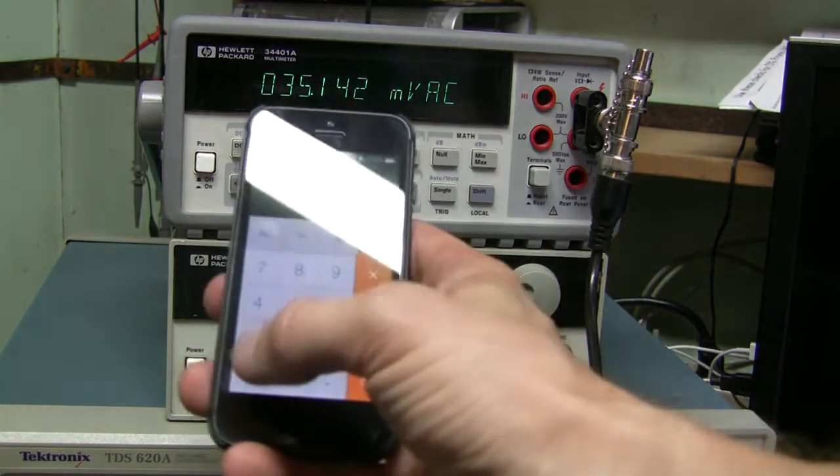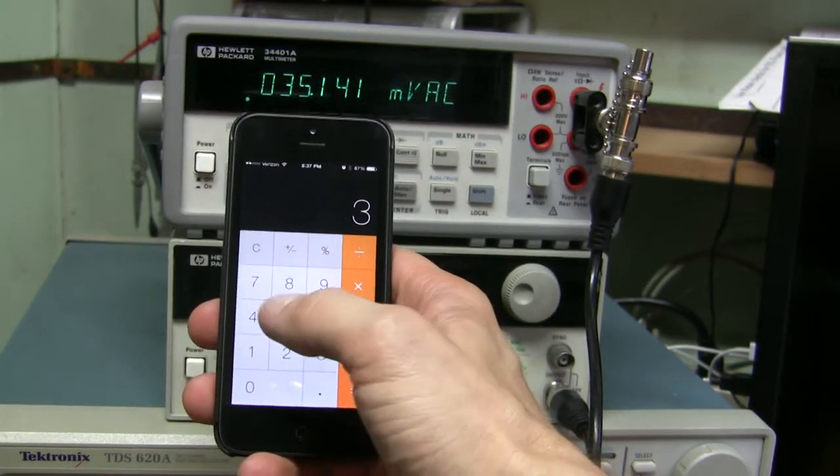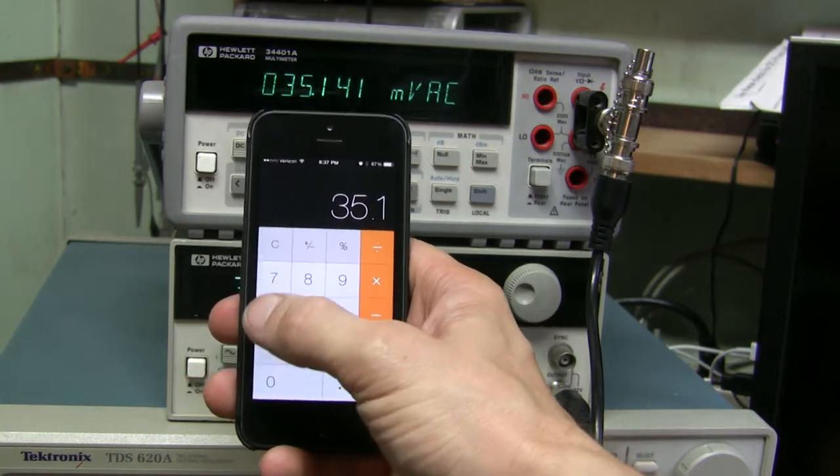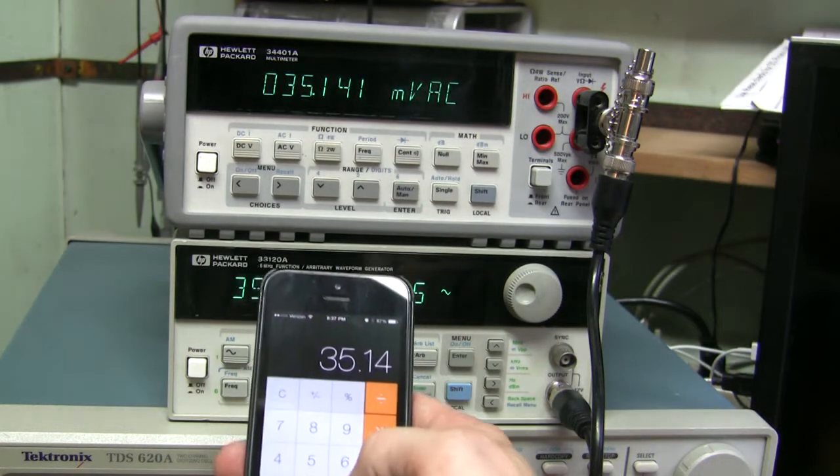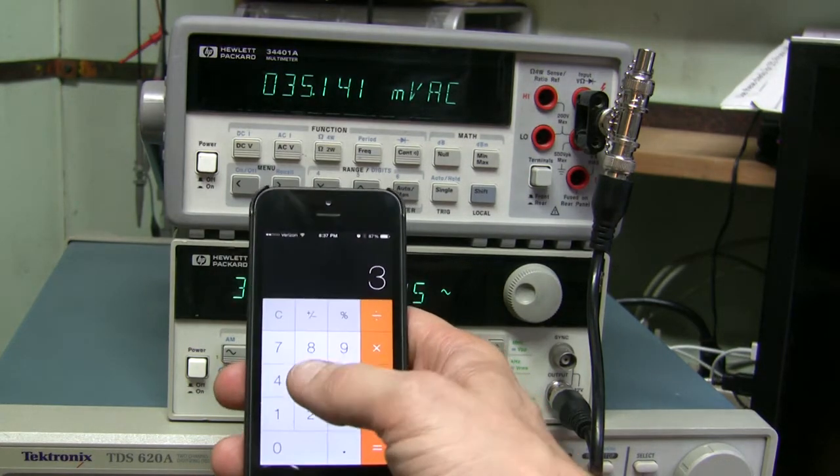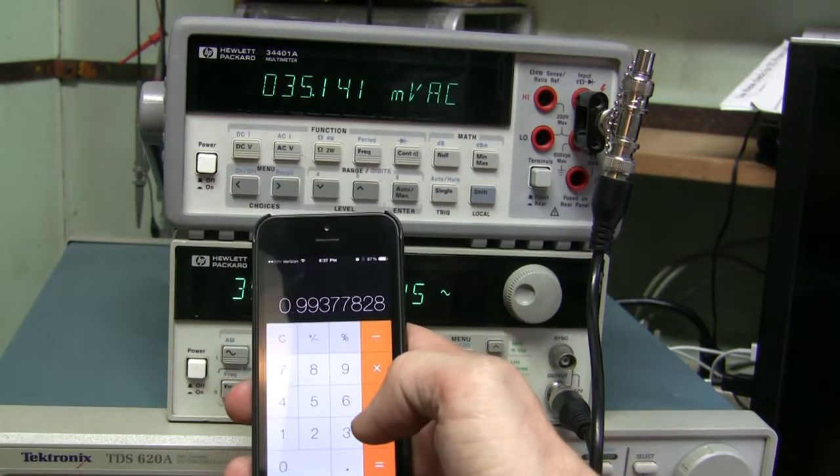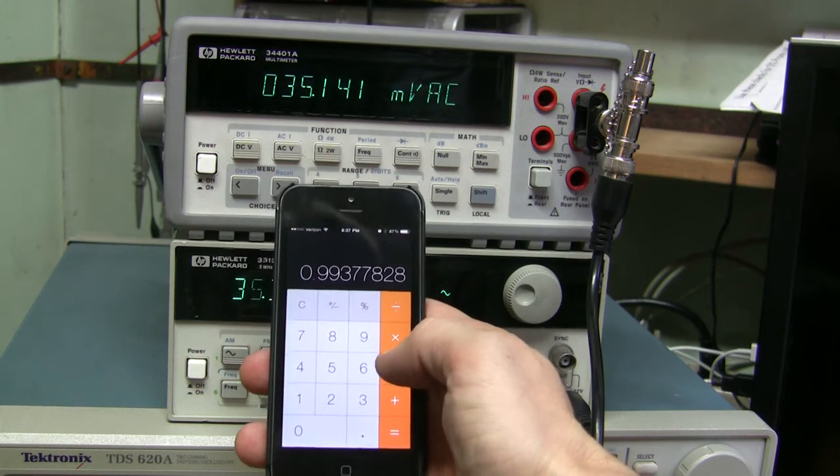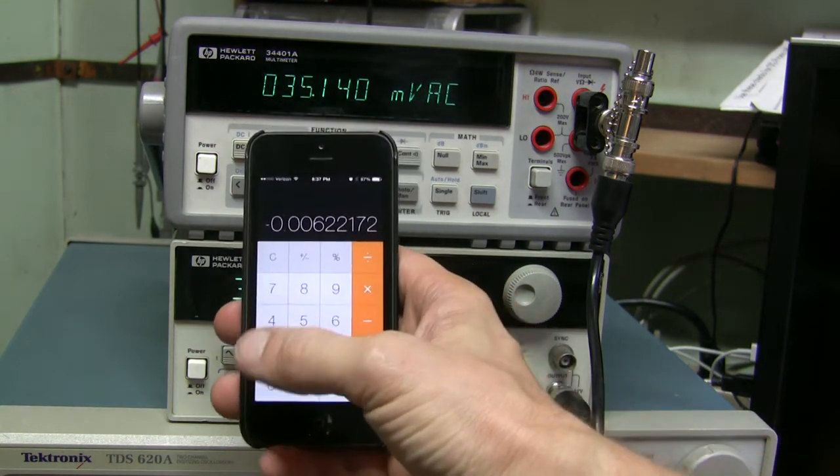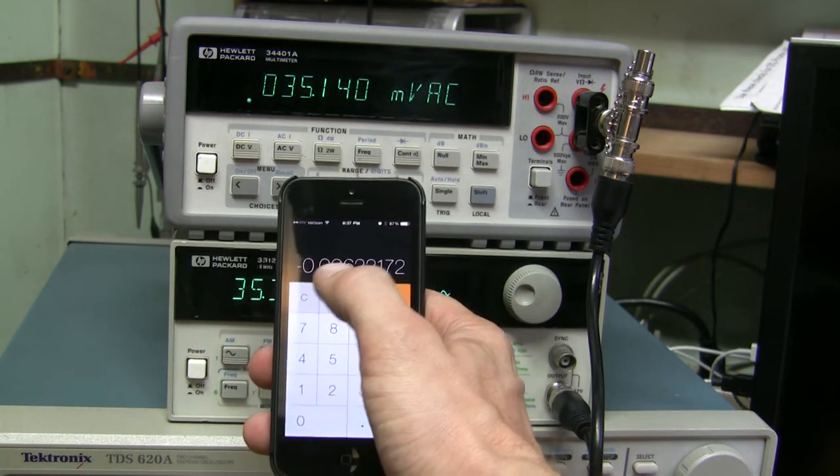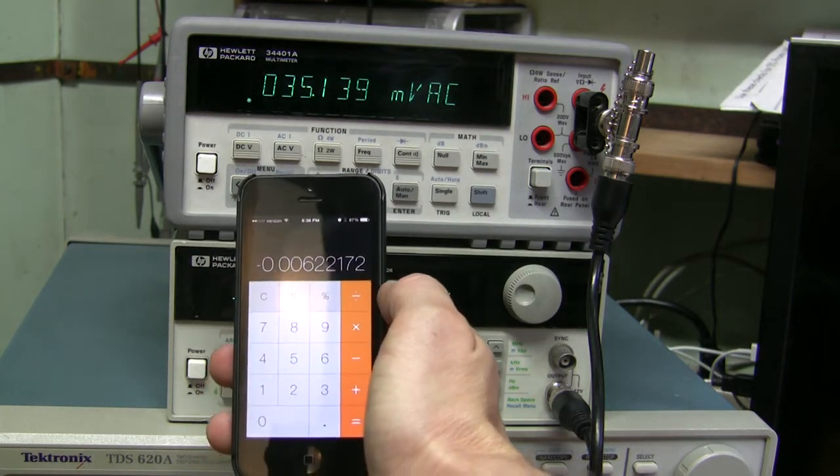Here we are. So first we enter what we read, which is 35.14 let's say, divided by 35.36 what we should get, and minus one. All right, so this is the difference. If we shift the point two decimal places, it's going to be 0.6 percent out, which is well within spec.